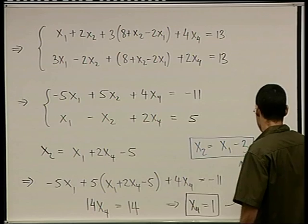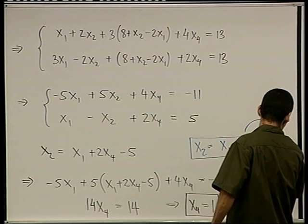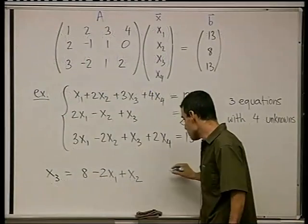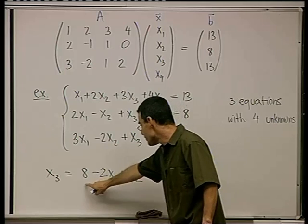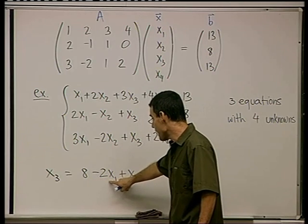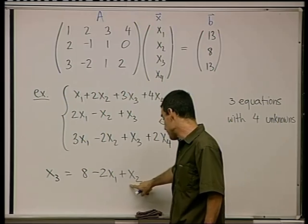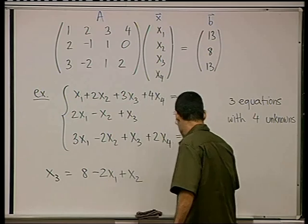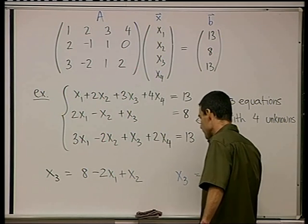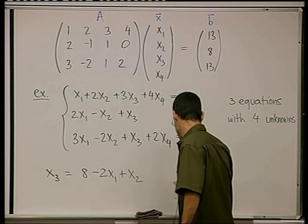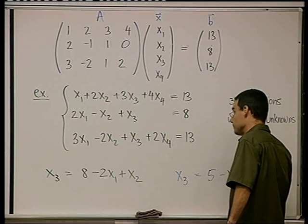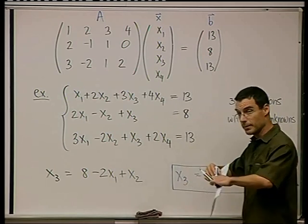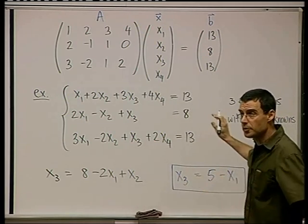Now I trace back to x3. That's going to be on this board, so you're going to have to move aboard here. x3 is 8 minus 2x1 plus x2, but x2 was x1 minus 3, so 8 minus 3 is going to be 5, and then minus 2x1 plus x1 is minus x1. Do you agree? And this exhausts all the information that I have.